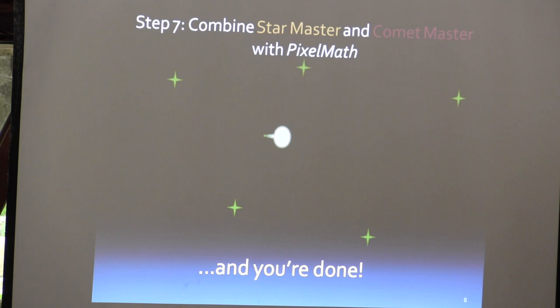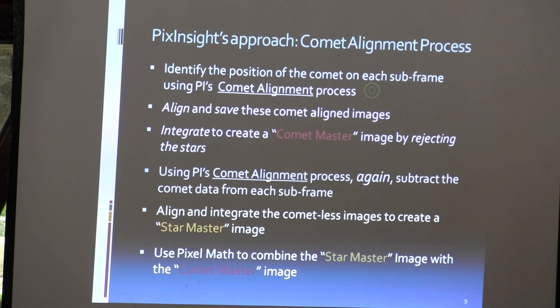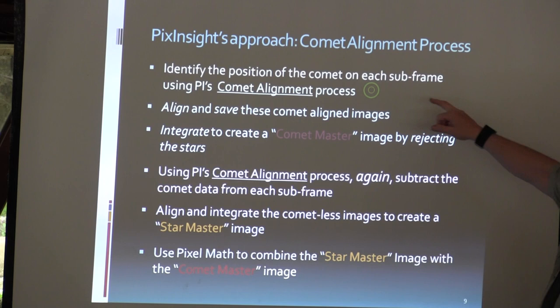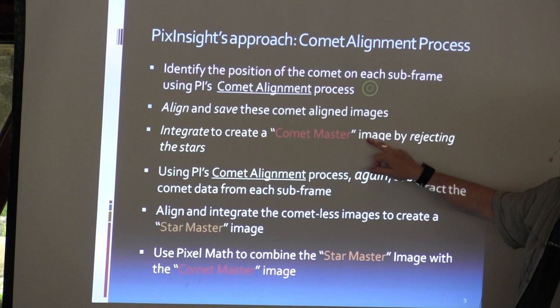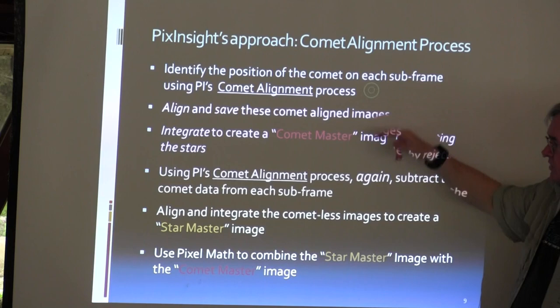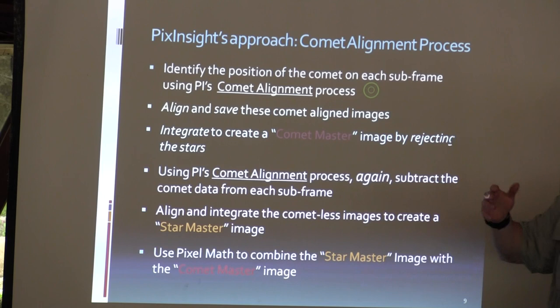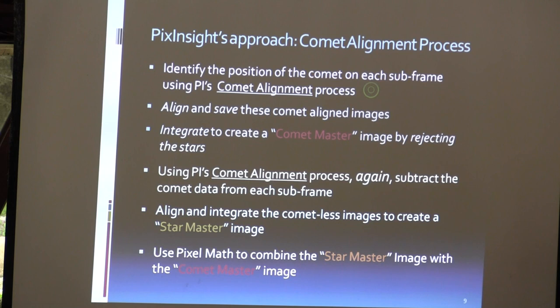That's when you go into the other processes in PixInsight to make it all pretty and sharp. So that's the process, and we'll go through that again in the demonstration. To summarize: you identify the position of the comet, save and align those images, save the stars that disappear as the comet master. Using the comet alignment process again, you align the original data, find the location of the comet, subtract the comet from each image, align them, and you have a star master.